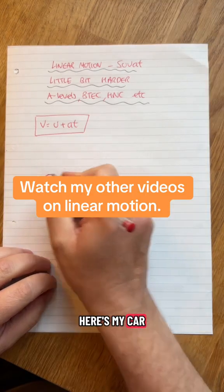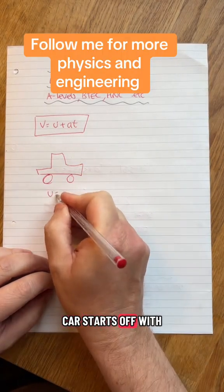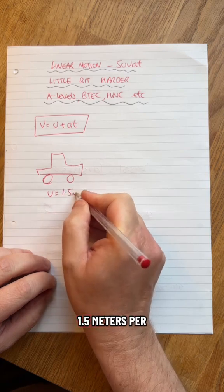Here's my car, A-level art. Here's my car. Let's pretend this car starts off at U is starting at, I don't know, 1.5 metres per second.